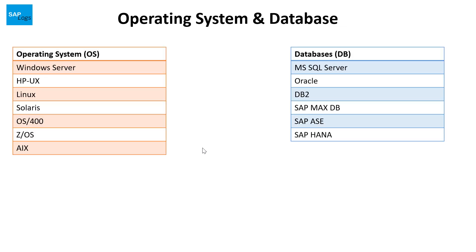SAP's Business Suite is based on the NetWeaver technology stack, which means it can run on multiple operating systems and databases. As you can see on the slide, the supported operating systems are Microsoft Windows Server, HPUX, Linux and different flavors of Linux, Solaris, and IBM's operating systems such as OS400, ZOS, and AIX. It also supports multiple databases such as Microsoft SQL Server, Oracle, IBM's DB2, SAP's MaxDB, ASE, and the in-memory database called SAP HANA.